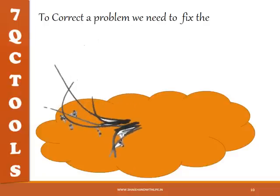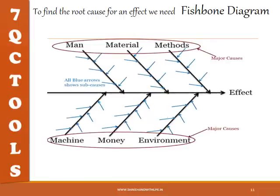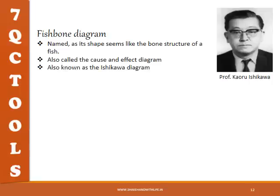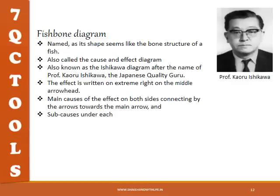To correct a problem, we need to fix the root cause. To find the root cause for an effect, we need the fishbone diagram — this is our fifth tool. The fishbone diagram is named so because its shape resembles the bone structure of a fish. It is also called the cause-and-effect diagram, and also known as the Ishikawa diagram after Professor Koru Ishikawa, the Japanese quality guru. The effect is written on the extreme right on the main arrowhead, main causes of the effect are shown on both sides connecting by arrows towards the main arrow, and sub-causes are listed under each main cause connecting by small arrows.